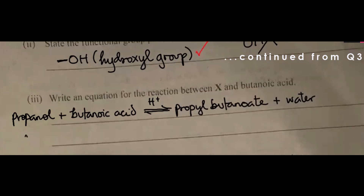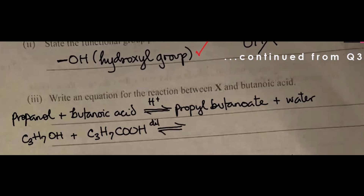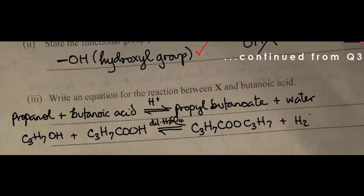This is C3H7OH plus C3H7COOH. Reversible reaction — you can write dilute H2SO4 based on the question given. So this will be C3H7COOC3H7 plus H2O.